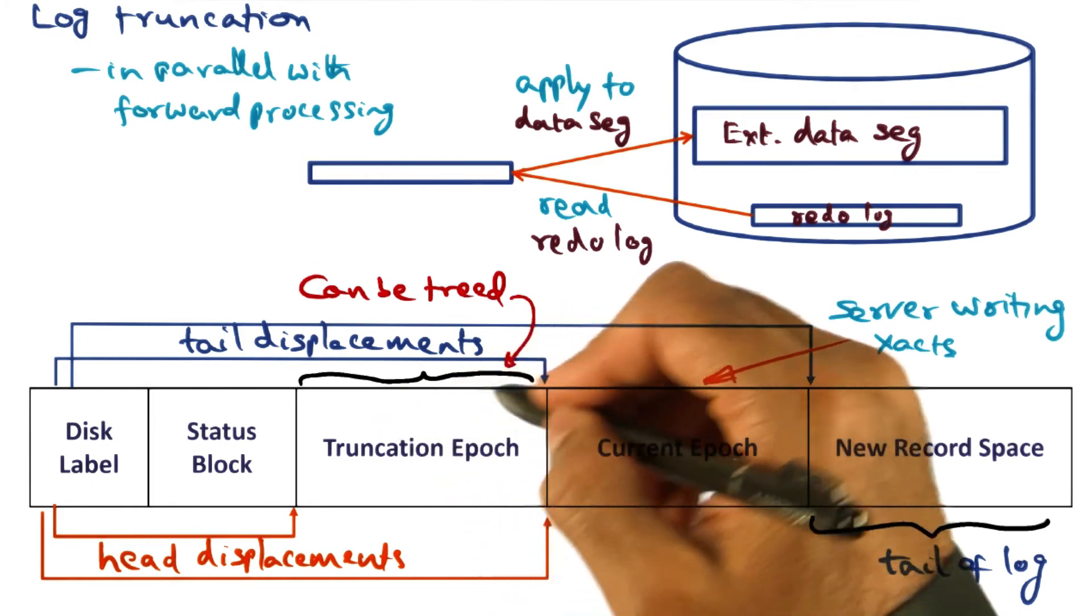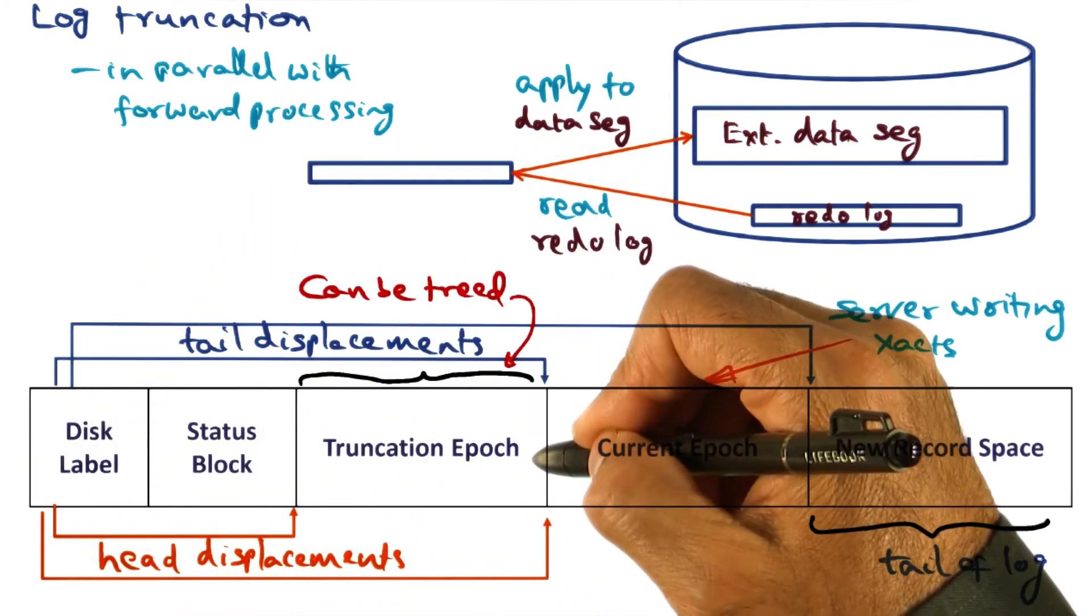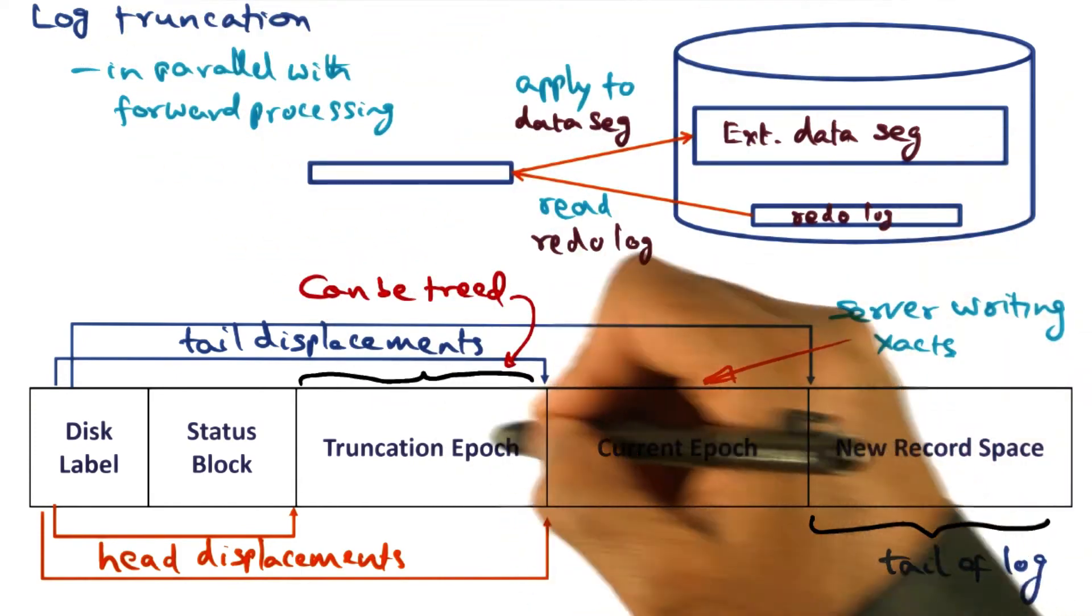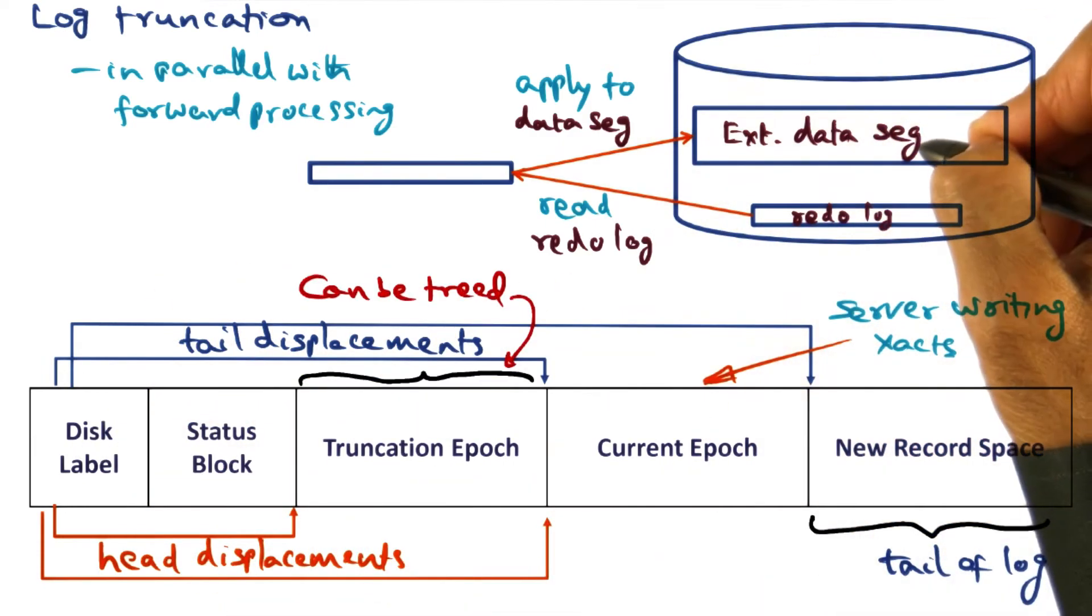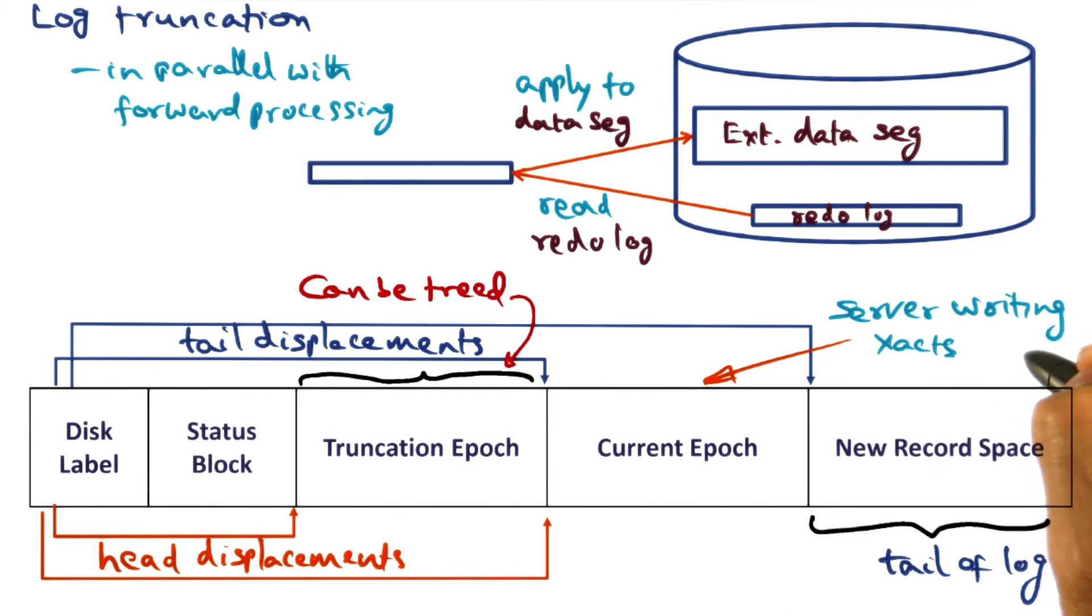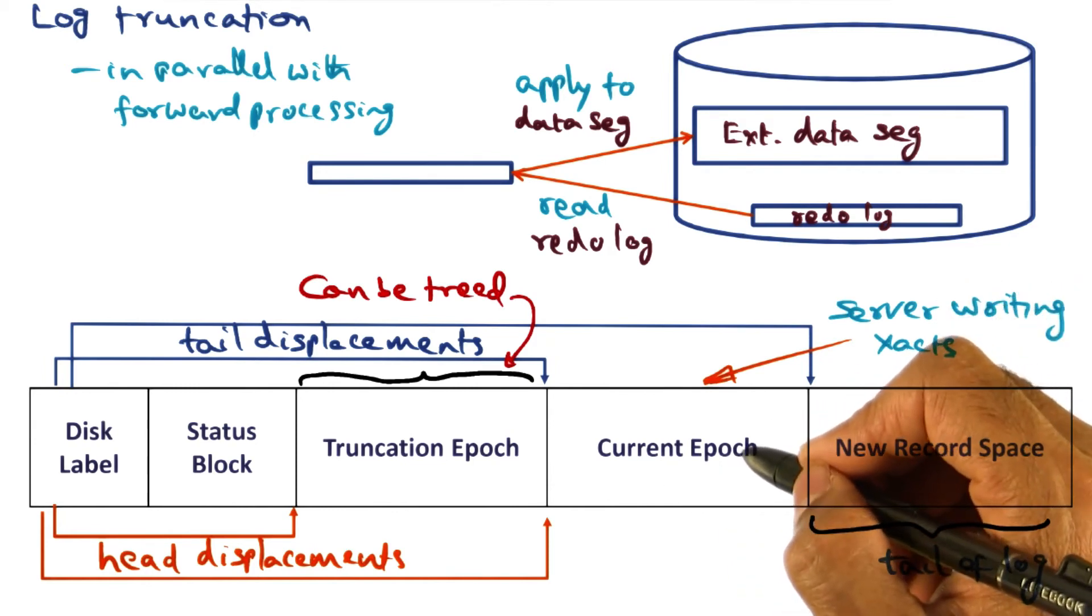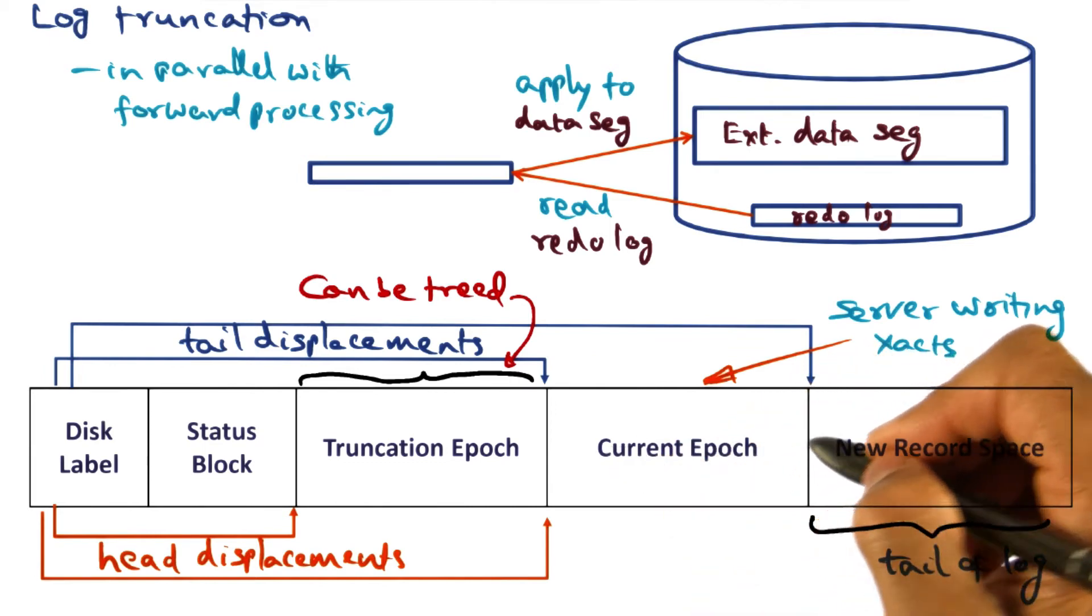So the idea is that we are allowing LRVM to do its work in terms of log truncation by reading a portion of this log, which is a truncation epoch portion of the log, and applying to the external data segments. And in parallel with that, we are also allowing the application to make forward progress by writing new log records to the current epoch.